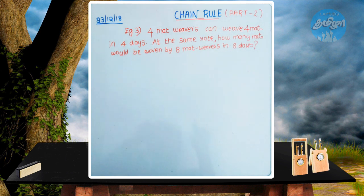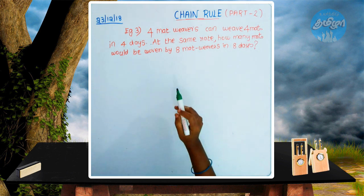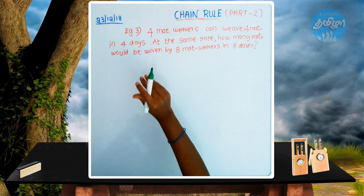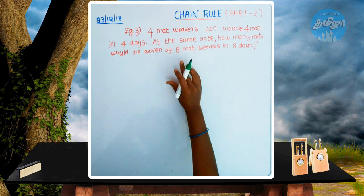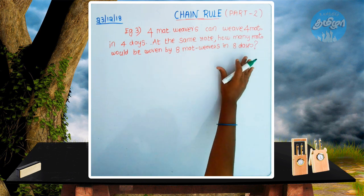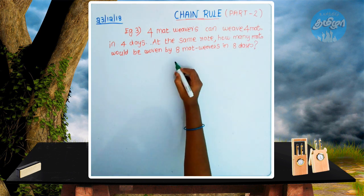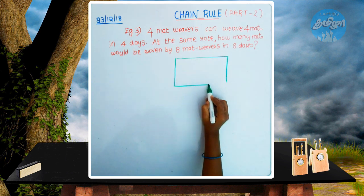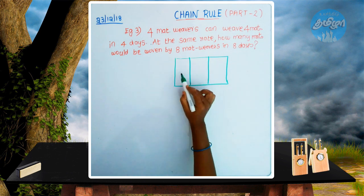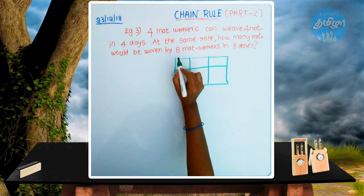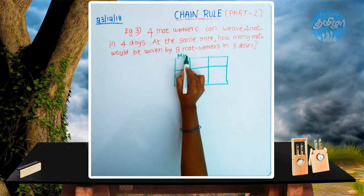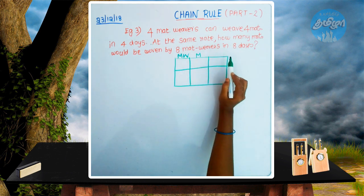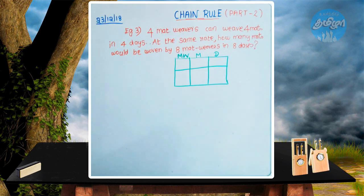Let's look at Example 3. You can do 4 mats. First, you can do a box — you can choose a heading in the box. You can do a mat weaver. Now what you can do is you can do 4 mats in 4 days.